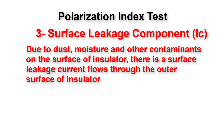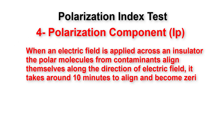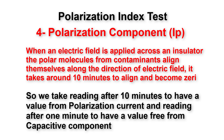Due to dust, moisture, and other contaminants on the surface of the insulator, there is a surface leakage current flowing through the outer surface. Finally, there is a polarization current: when an electric field is applied across the insulator, polar molecules from contaminants align themselves along the direction of the electric field. This alignment takes around 10 minutes to complete and then decays to zero — which is why we take the mega reading after 10 minutes, to ensure our result is free from polarization current.